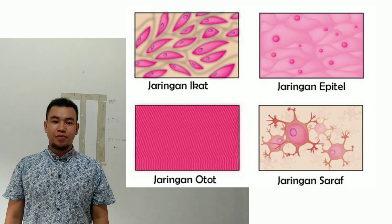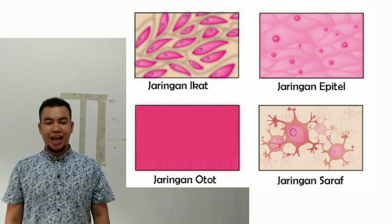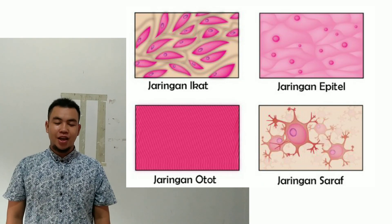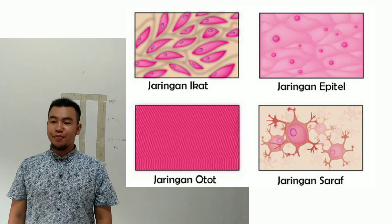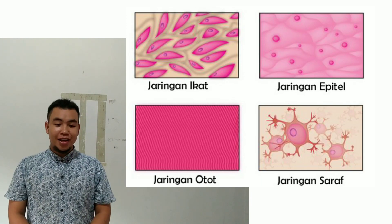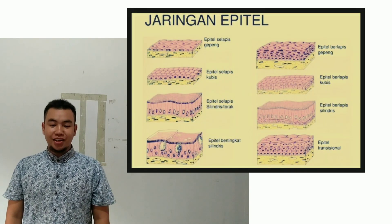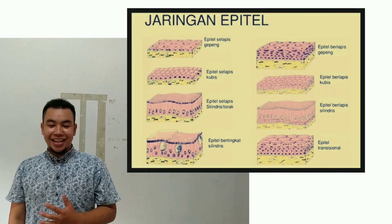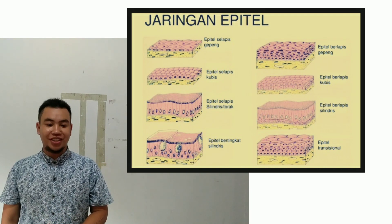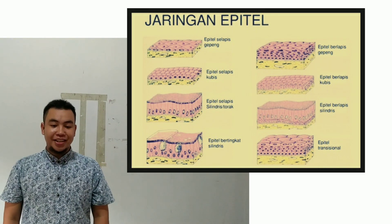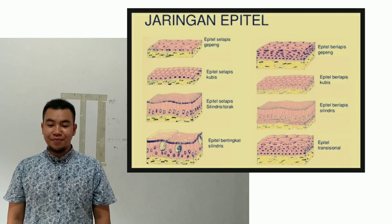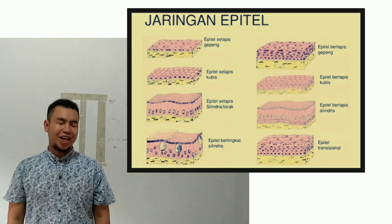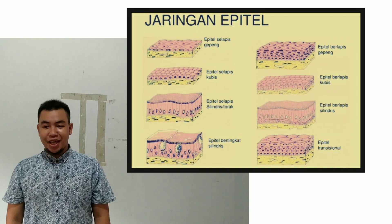Jaringan hewan adalah jaringan yang hanya terdapat di hewan. Jaringan ini dibagi menjadi empat bagian. Yaitu pertama jaringan epitelium. Jaringan ini adalah jaringan yang menutupi dan membatasi permukaan dan bagian tubuh, organ, rongga, dan saluran yang terletak di dalam tubuh. Jaringan epitel dibagi menjadi sembilan bagian.